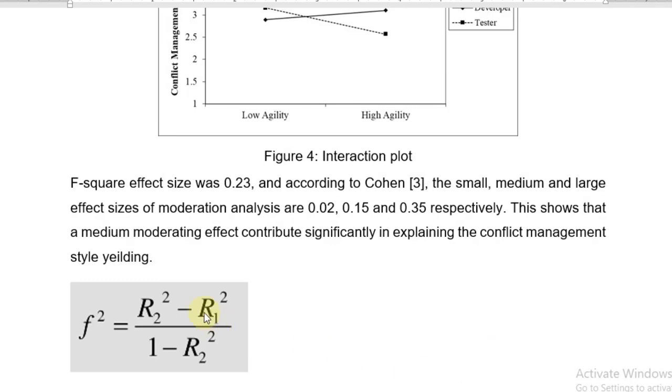Now the last step is computation of F-square effect sizes. We got effect size of 0.23. How we have calculated? The R2-square means the compute R-square value after the inclusion of moderating term.